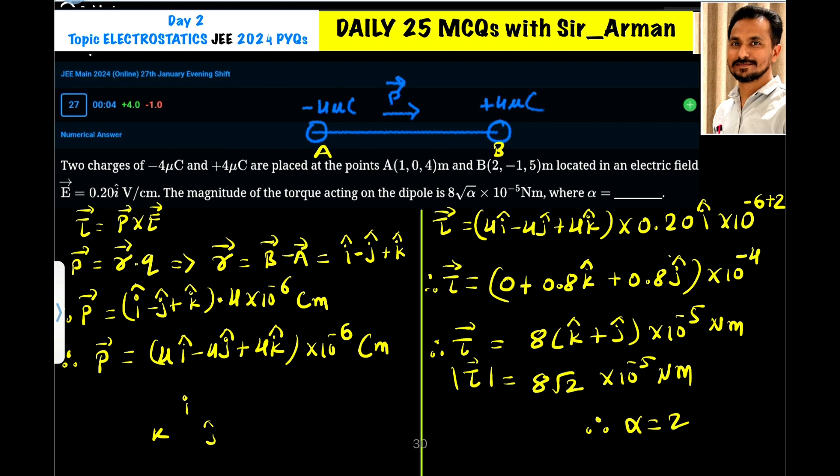Now to find the torque, we will use this equation P cross E. So here it is P and here it is E. Now it is a cross product. So for cross product, I cross J is K, J cross K is I, and K cross I is J, and the reverse, if I do J cross I, then it becomes minus K.